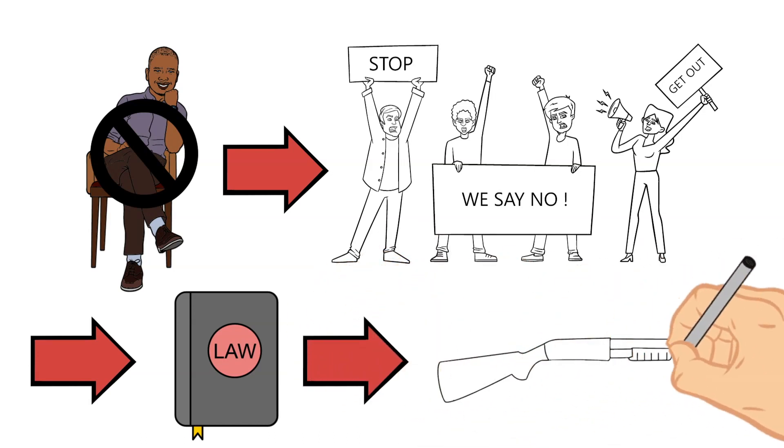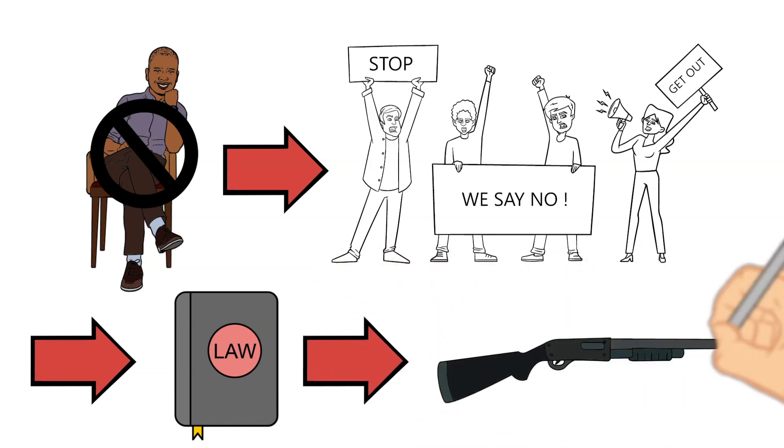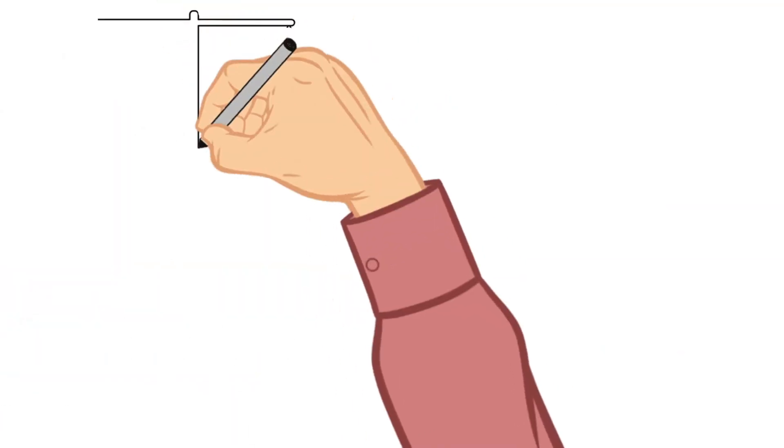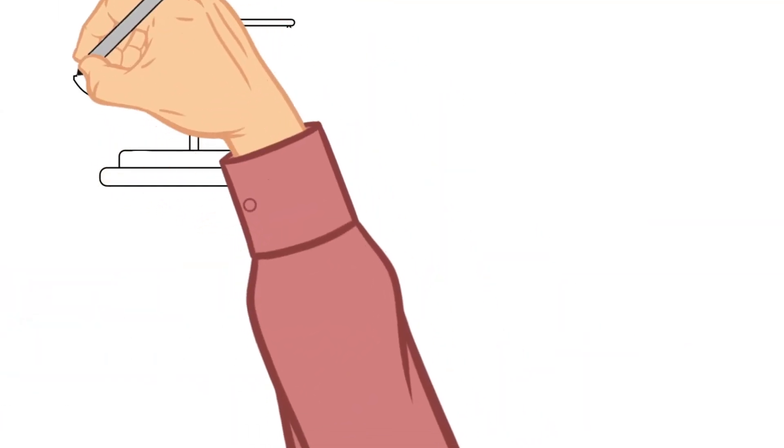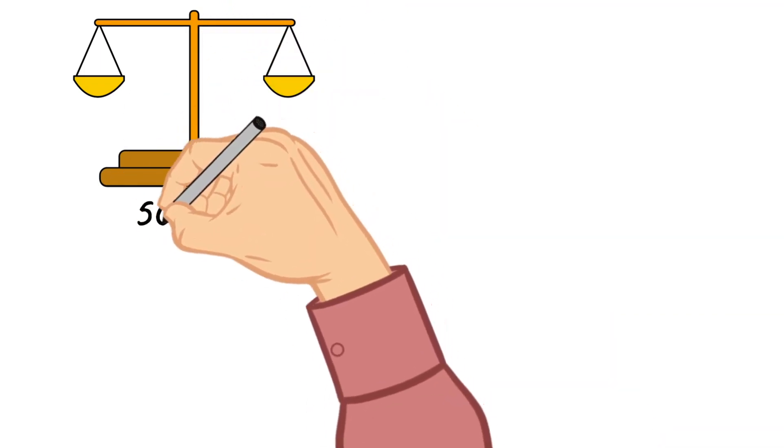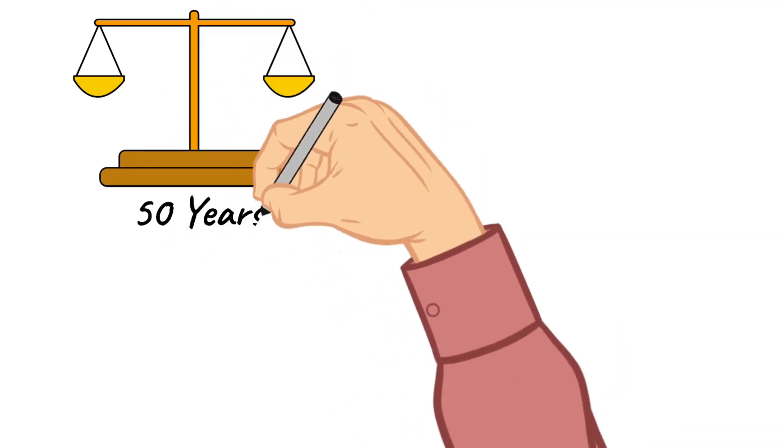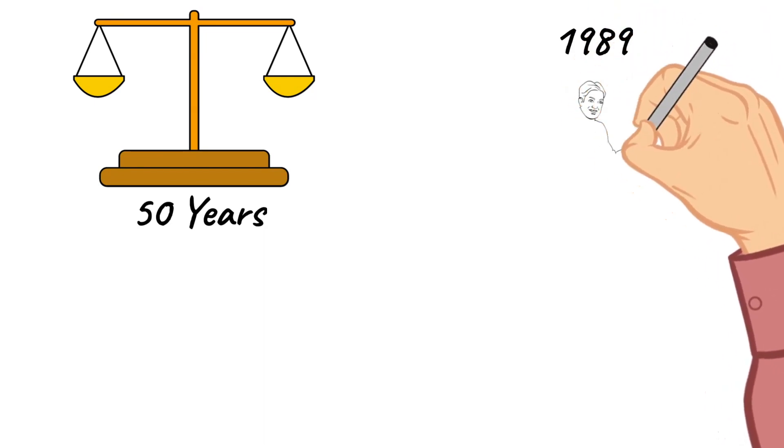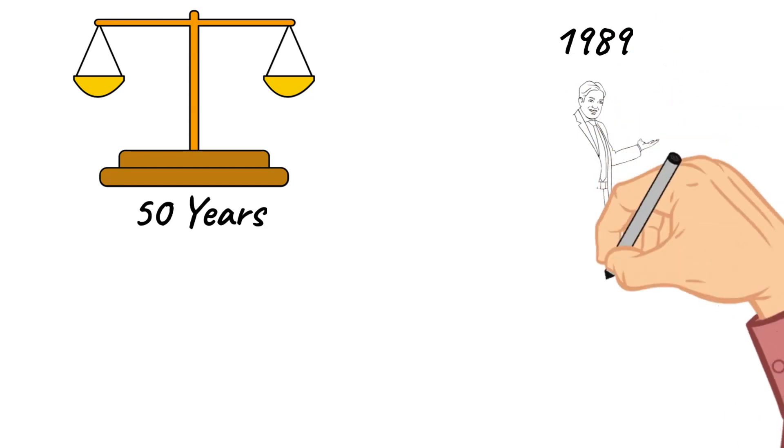Despite strong and consistent opposition to apartheid within and outside of South Africa, its laws remained in effect for the better part of 50 years. In 1989, a conservative man named FW de Klerk was favored to win in the election, and he took office.